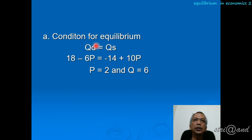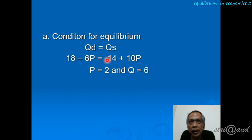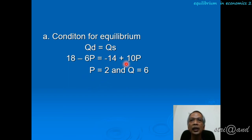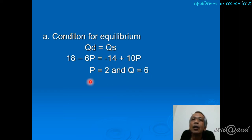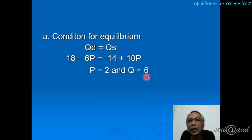This is the answer for question A. To find equilibrium, the condition is that quantity demanded equals quantity supplied. Setting the demand equal to the supply and solving, we find the price equals 2. Substituting price equals 2 into the demand or supply equation gives us the quantity, which equals 6. So the equilibrium price is 2 and the equilibrium quantity is 6.